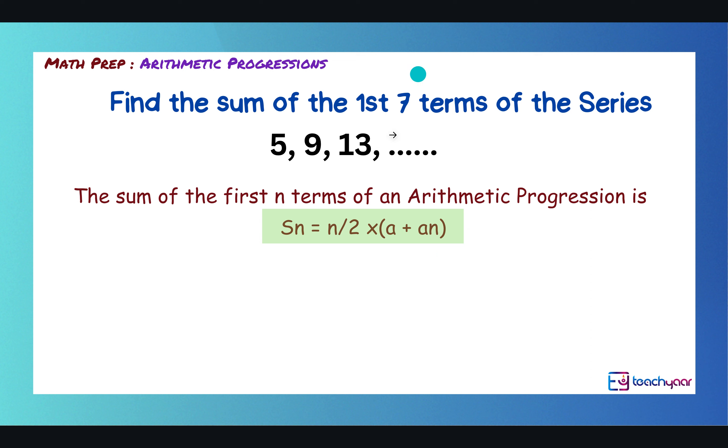Now, as we can see here, we have the first three terms of the series. But we don't have the seventh term. So, we have to first find the seventh term of the arithmetic progression, then use it to compute the sum.